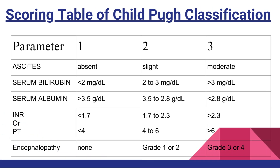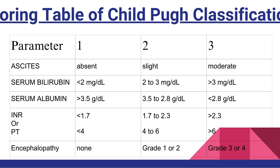The scoring table of the Child-Pugh classification uses the chosen five parameters. The minimum score that can be given is 1 and the maximum is 3. Based on minimum scoring, the total will be 5, and based on maximum scoring, the total will be 15.